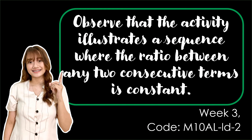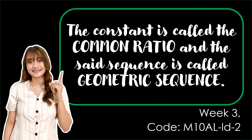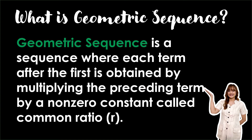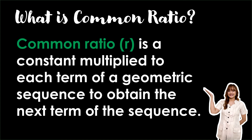From our activity, observe that it illustrates a sequence where the ratio between any two consecutive terms is constant. This constant is called the common ratio, and the sequence is called a geometric sequence. A geometric sequence is a sequence where each term after the first is obtained by multiplying the preceding term by a non-zero constant called the common ratio. The common ratio is the constant multiplied to each term of a geometric sequence to obtain the next term.